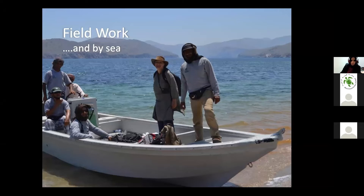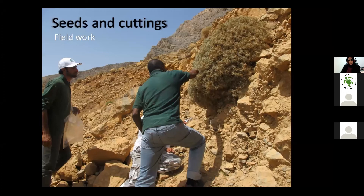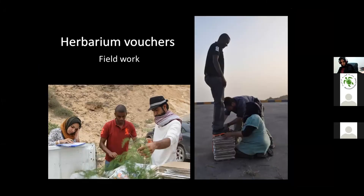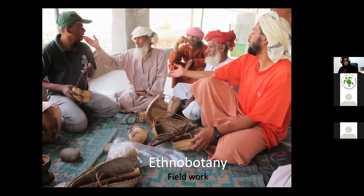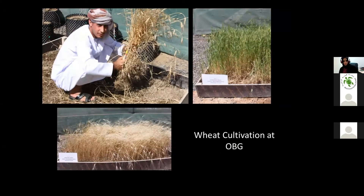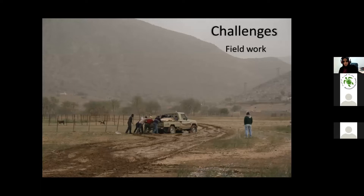We mainly collect seeds and cuttings, and also collect herbarium vouchers — another library for our plants. Alongside this, we document ethnobotany — the knowledge hidden within people in isolated villages in Oman. We have a brilliant team that visits many small, isolated villages in the mountains, wadis, and different locations across the country, to capture and document this traditional knowledge in large databases. This image shows the team after collecting one of the wild wheat relative species, ready to propagate and cultivate it in our nurseries.